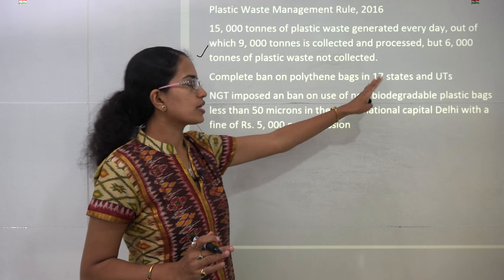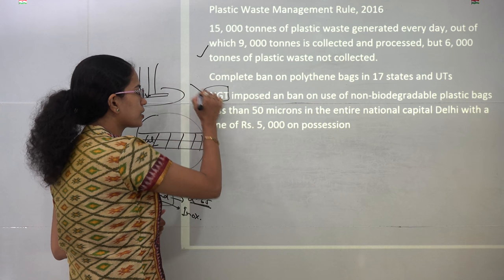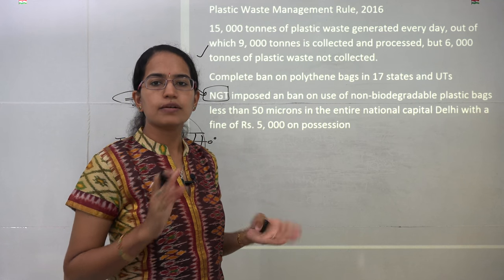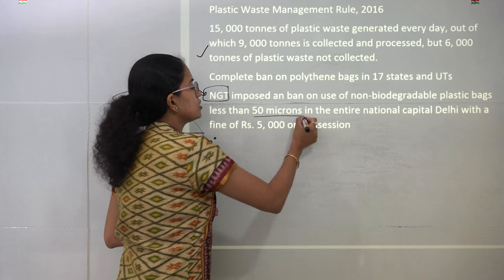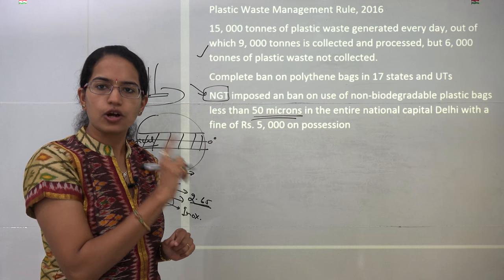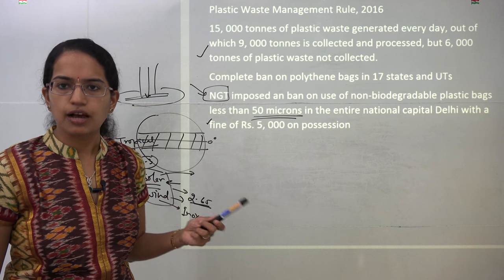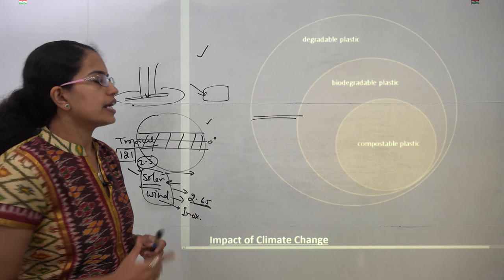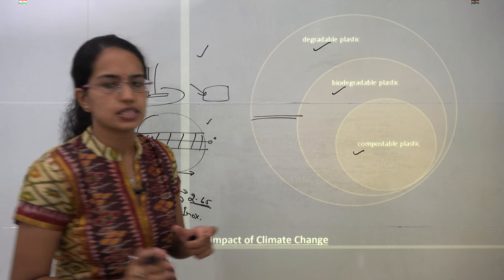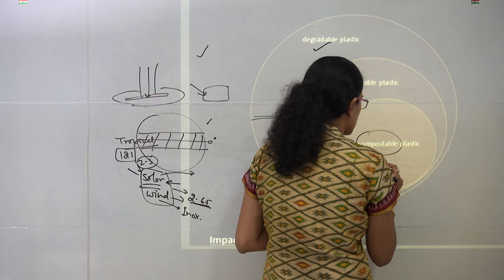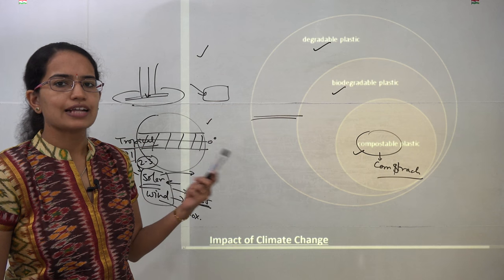17 states in India have brought a complete ban on plastic bags and polythene bags. The National Green Tribunal (NGT) — very important — has banned the use of non-biodegradable plastic bags less than 50 microns in Delhi, with a fine of 5,000 rupees for violators. Under plastics, there are three ranges: degradable, biodegradable, and compostable. Compostable is the best, made from corn starch and can be composted. Biodegradable plastic is made of biopolymers.